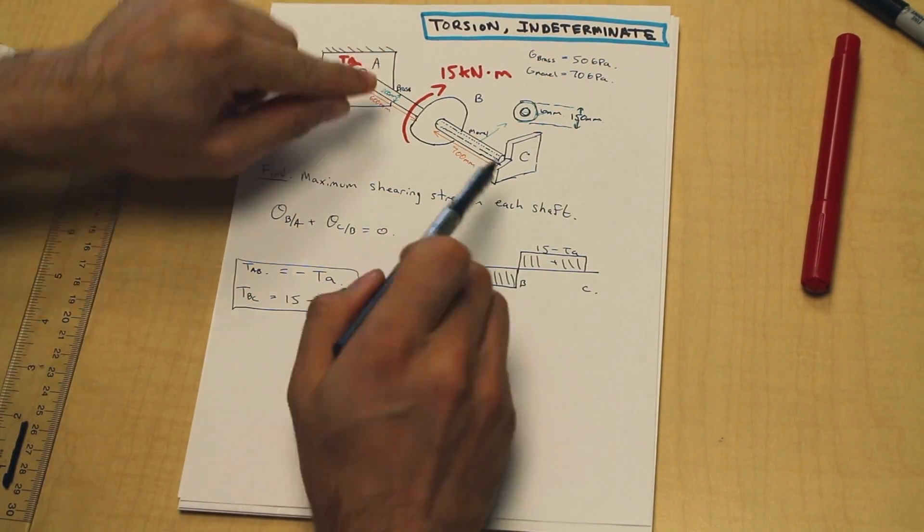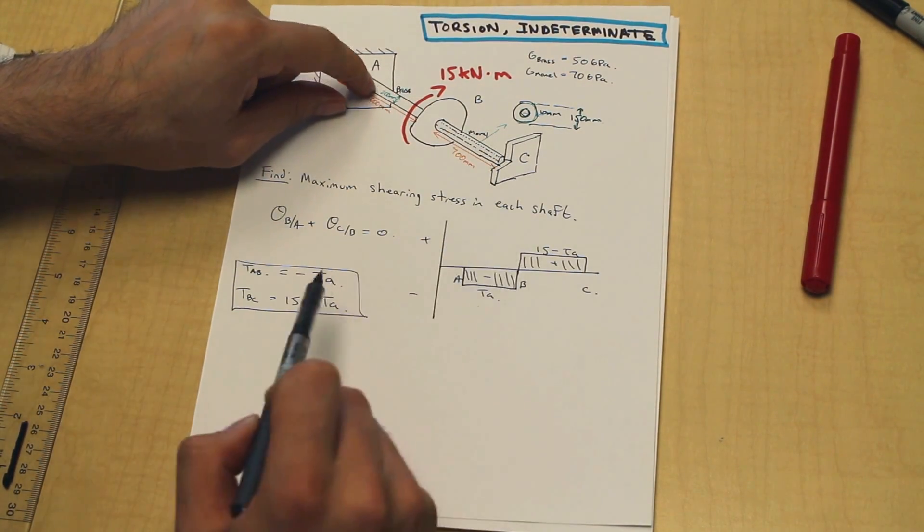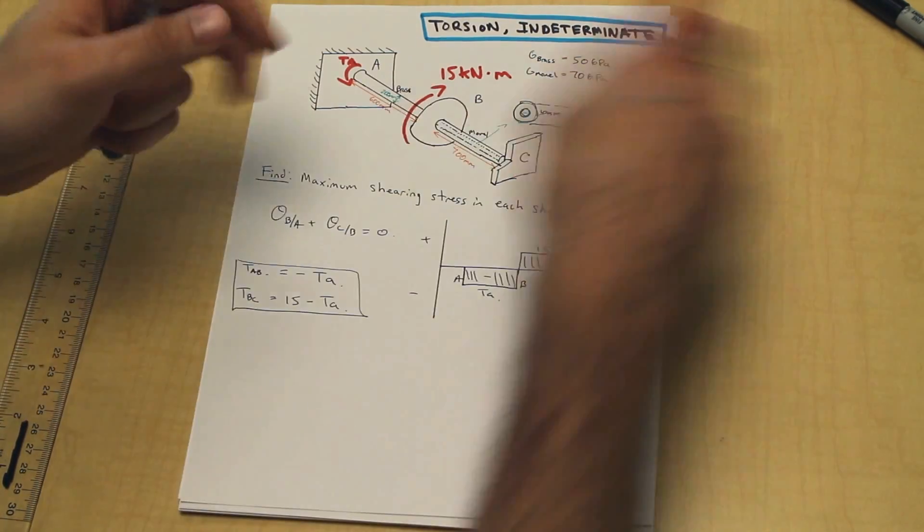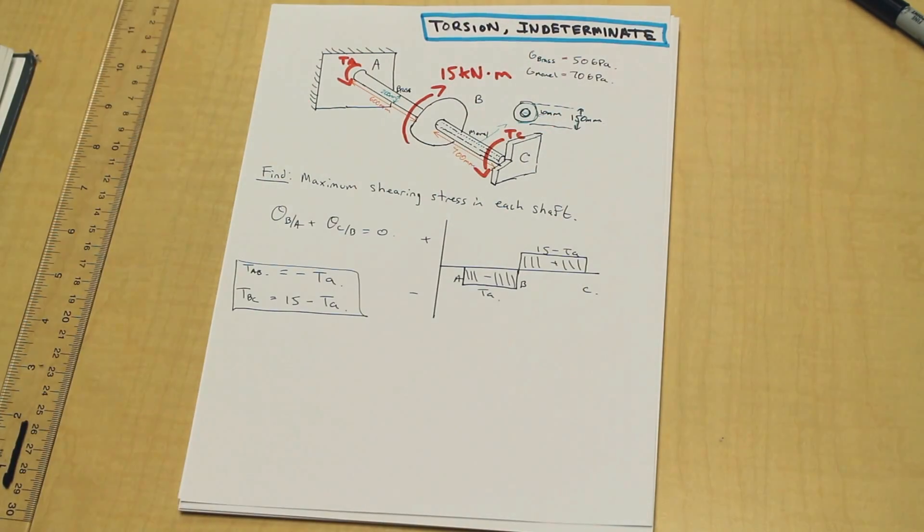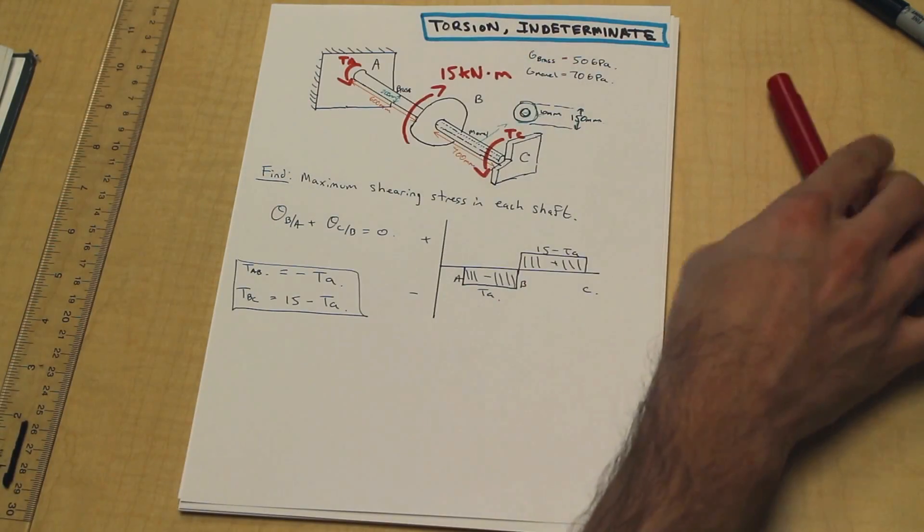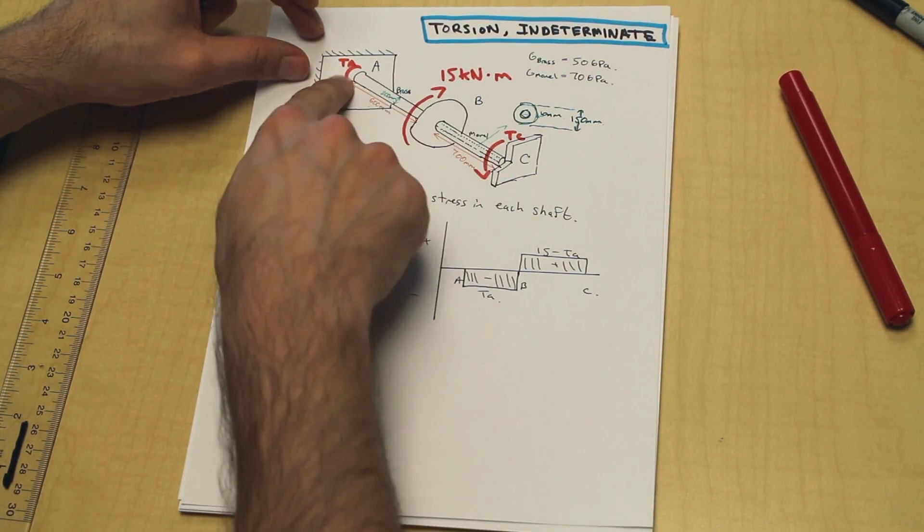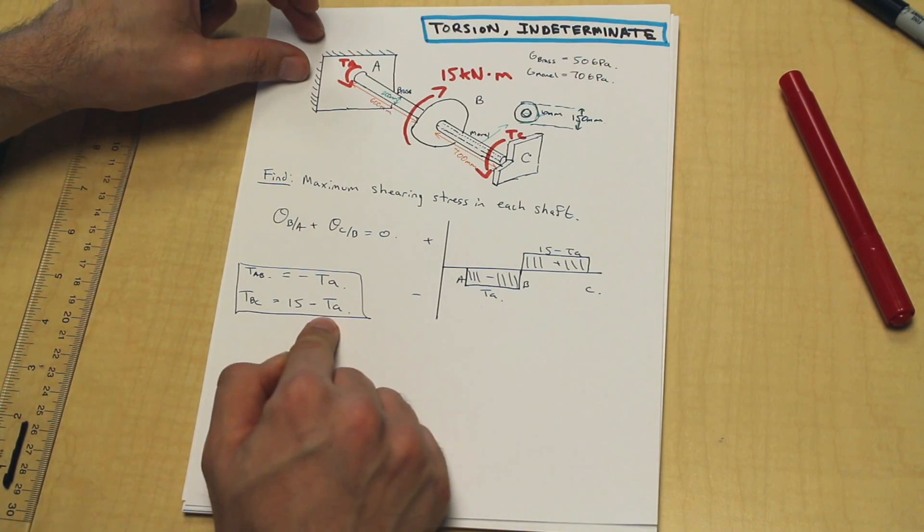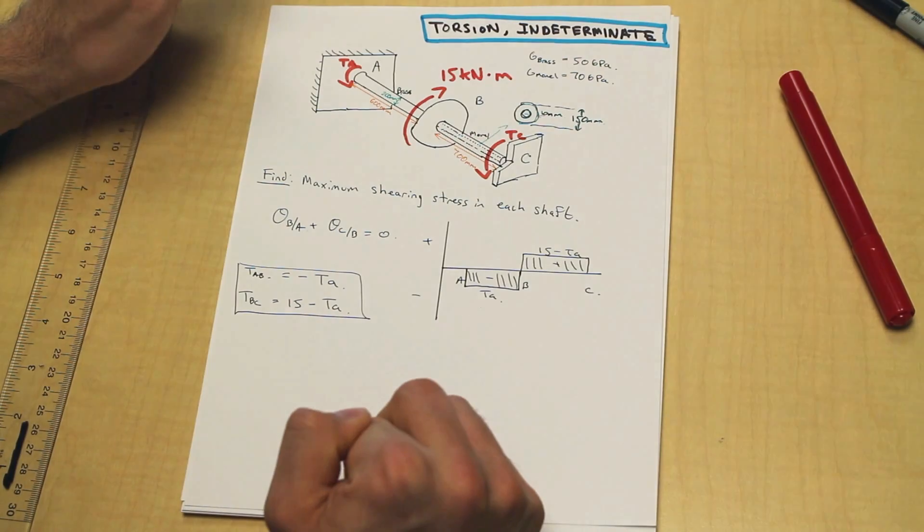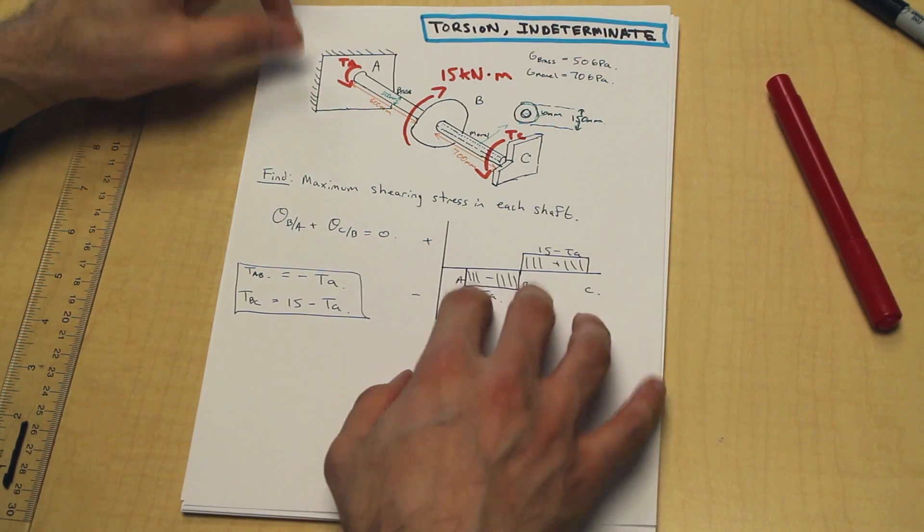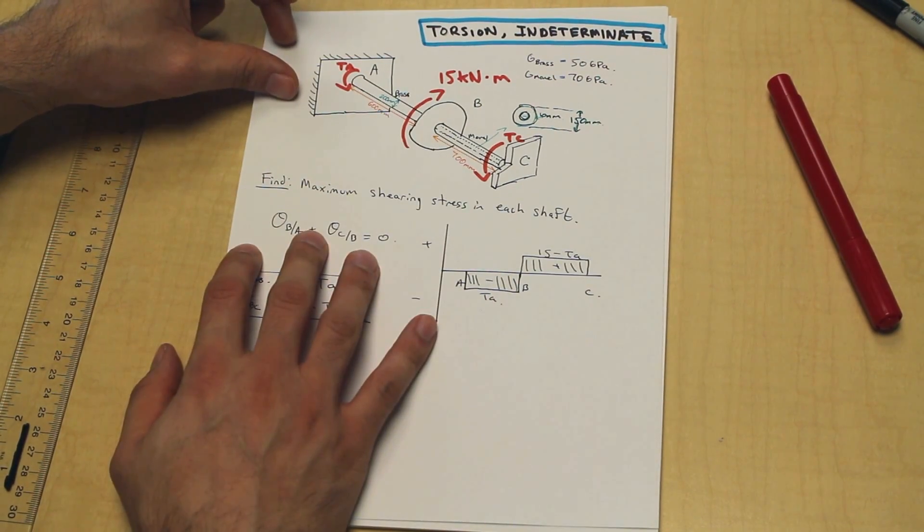We have established that the angles of twist of AB and BC, the sum of those must equal zero. And you know what, I did forget, but let's draw this just so we don't get confused there. Alright, so we've established the internal resisting torques in terms of TA. In terms of one variable, that's important. Don't put it in terms of anything else.